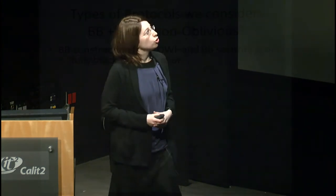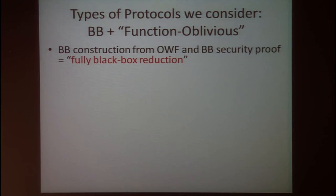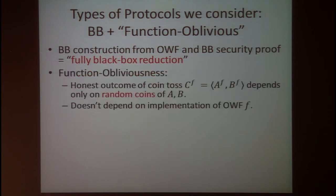We consider fully black box reductions: constructions of coin tossing from one-way functions that are black box in both construction and security proof. We introduce a new property called function obliviousness: a coin tossing protocol is function oblivious if the honest outcome c depends only on the random coins of Alice and Bob, but not on the specific implementation of the one-way function f. Various known coin tossing protocols actually possess this property.